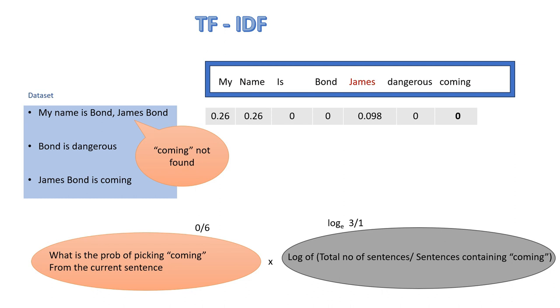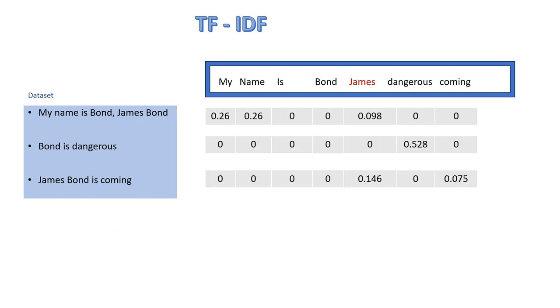Note that the value will be zero for the words which are not present in the sentence or the words which are present in all the sentences of the dataset.